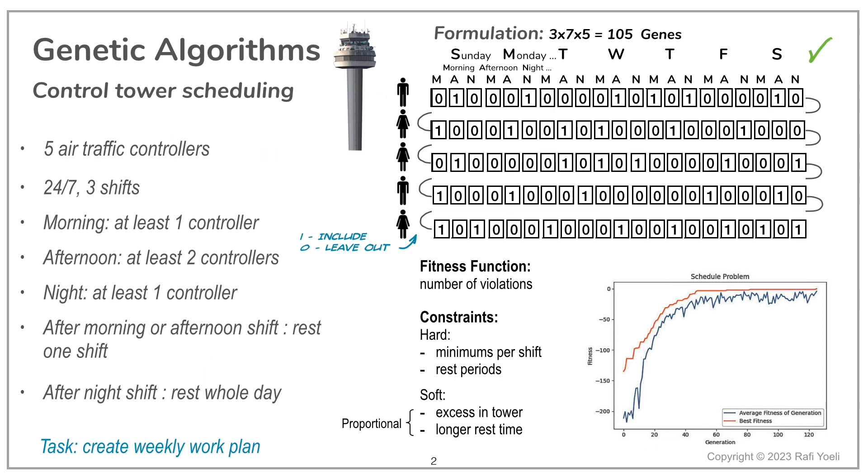Perhaps it's worthwhile running it again with fewer controllers, and see if we can save the expense of a salary or two. So we tried that. Here it is with just 4 controllers. We didn't reach a perfect plan, the best it could do was 7 violations. Going down to 3 people, we have a steeper initial climb, but the best the program could do is 41 violations.